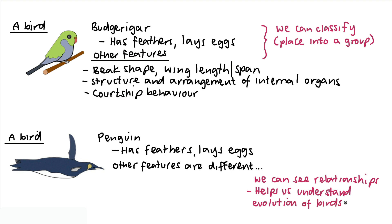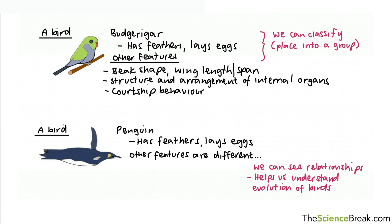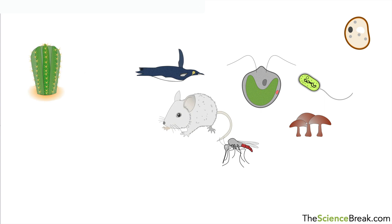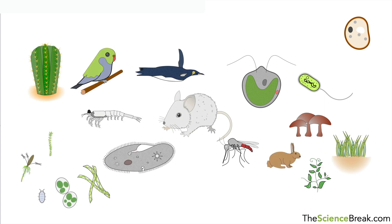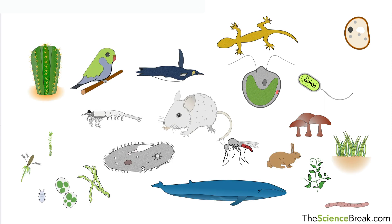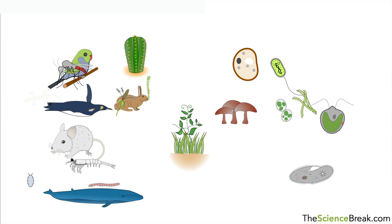However, there are more living things on the planet than just birds, of course. And over time, scientists have managed to classify many living things into different groups. Here are examples of lots more living things, obviously nowhere near the amount that actually exists. And we can actually group them into different groups. In fact, we have five different groups.